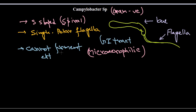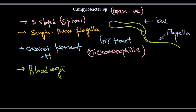We can culture this kind of bacteria in special selective mediums, like blood agar medium containing antibiotics, to inhibit the growth of other fecal coliforms or fecal flora. Since they are present in the GI tract, we can find them in feces, and they can be cultured on blood agar media.